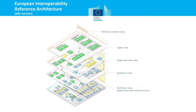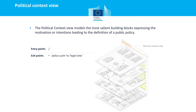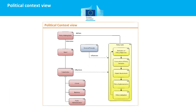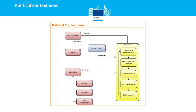The political context view models the most salient building blocks expressing the motivation or intentions leading to the definition of a public policy. The key building block is the stakeholder and its needs — a stakeholder could be a citizen, a business, or a public administration in Europe. A policy-making body, like the European Commission, intervenes on stakeholder needs by defining a policy cycle, which produces a policy through sub-steps: definition of policy objectives, formulation of policy scenarios, impact assessment, policy implementation, and policy evaluation. General principles such as subsidiarity, conferral, and proportionality influence the policy cycle.